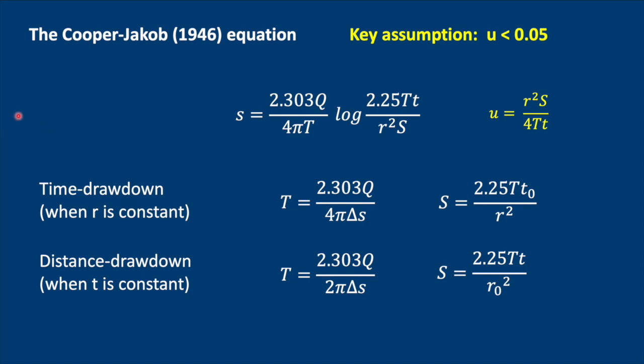This is a quick summary of all the equations for the Cooper-Jacob method. Just please remember that U must be less than 0.05 or we cannot apply the equations.